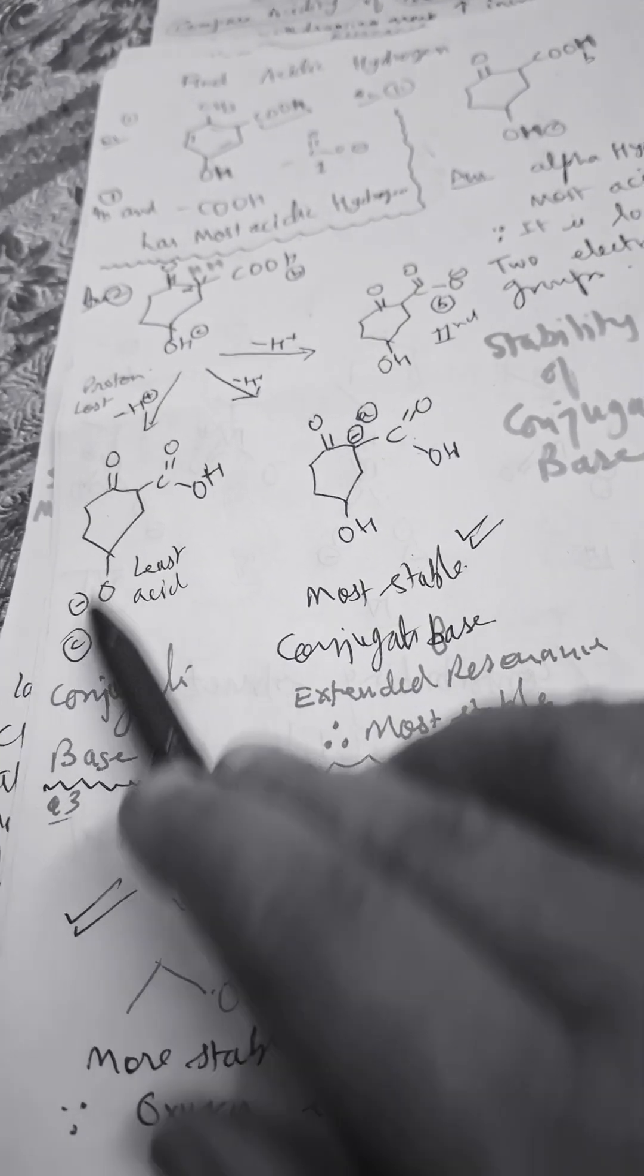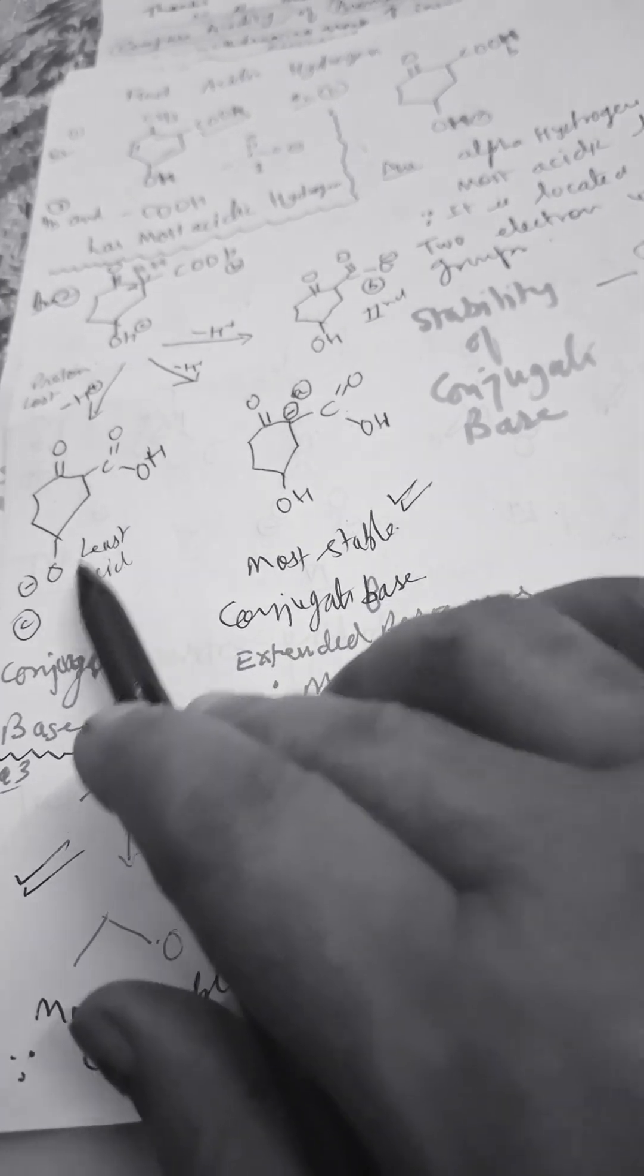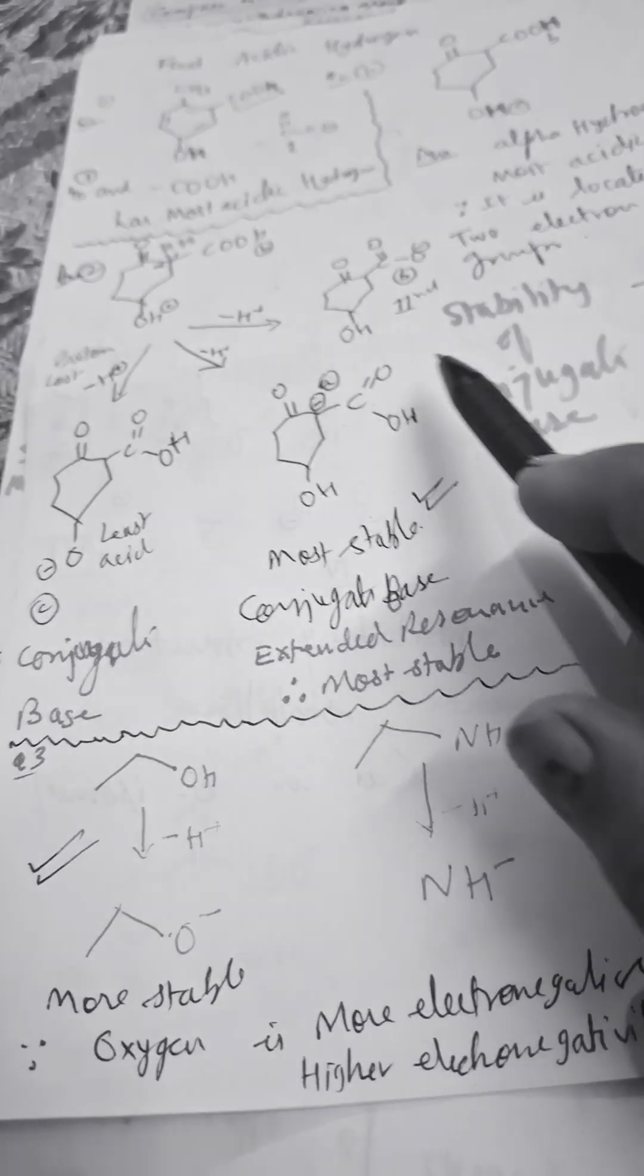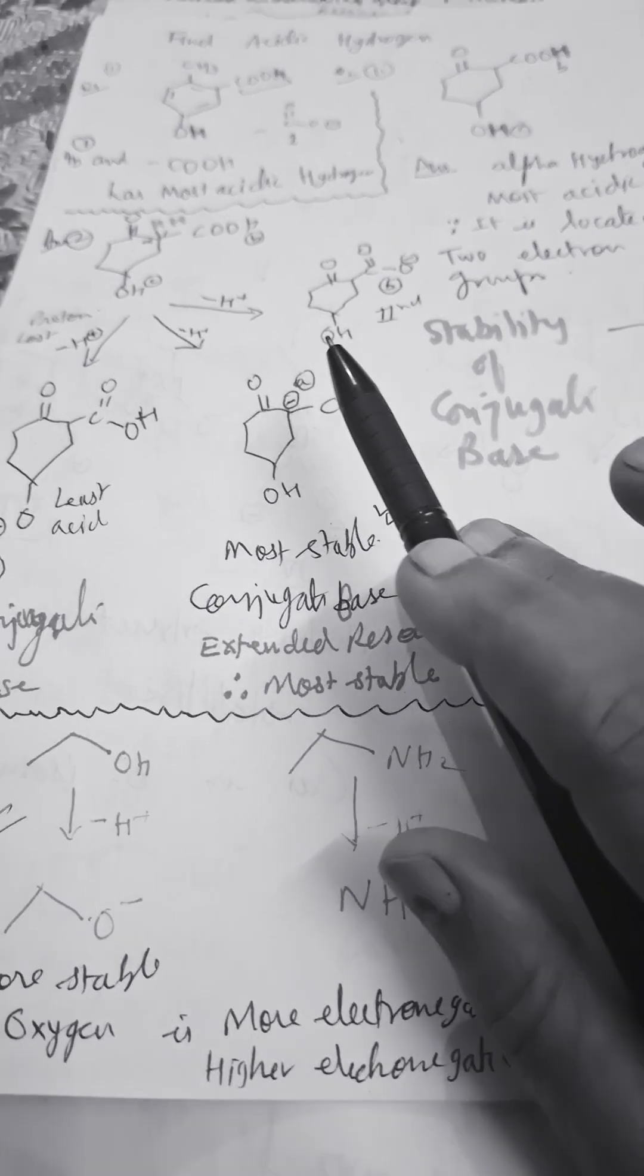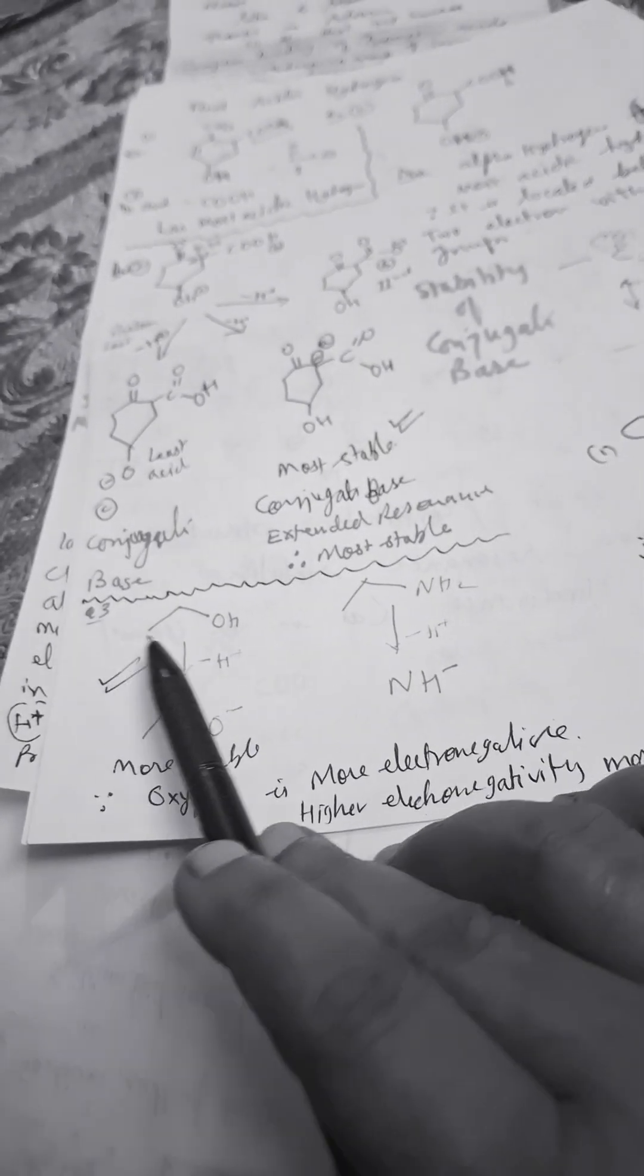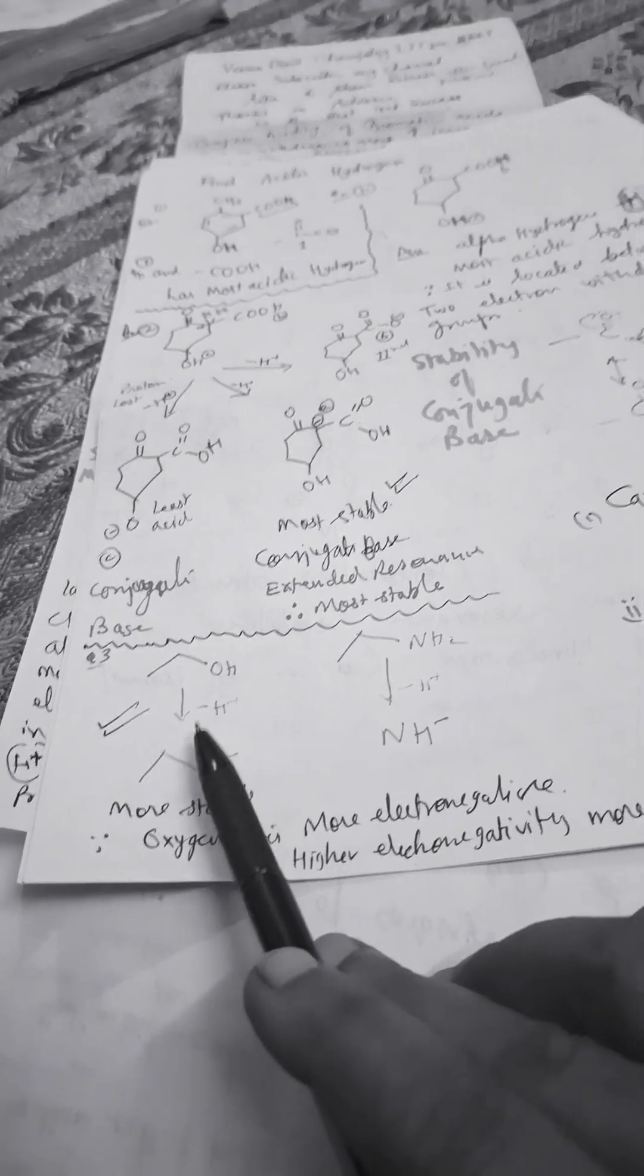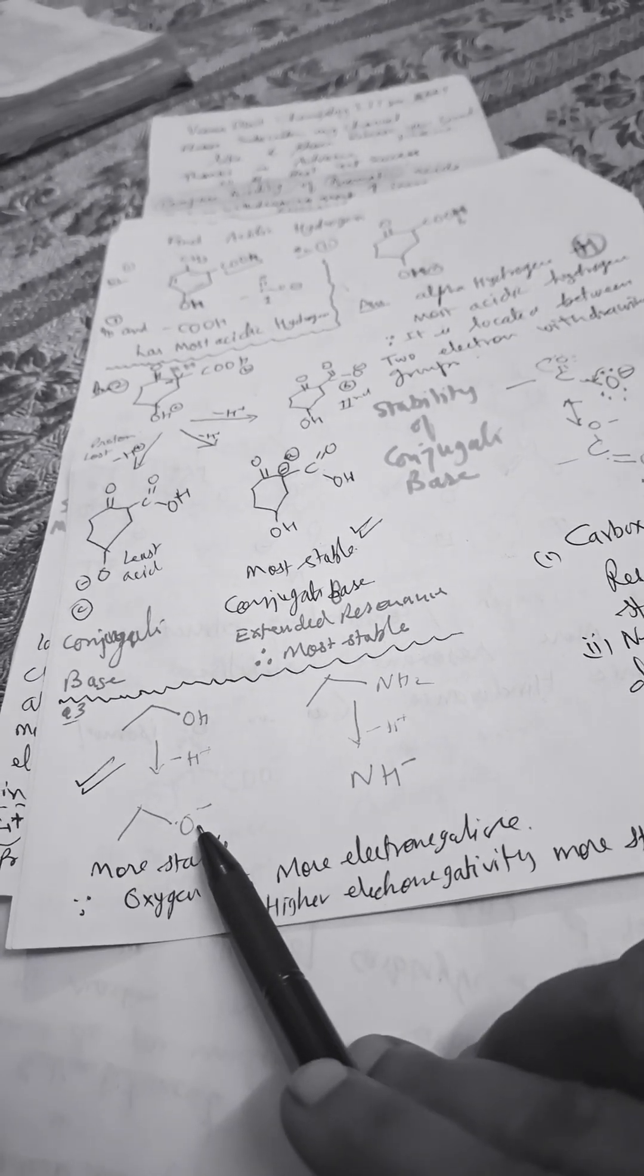The conjugate base lost from here will be least acidic. This is the most acidic hydrogen we are discussing. Now here we have OH group and NH2 group. The OH group is more stable as a phenol.